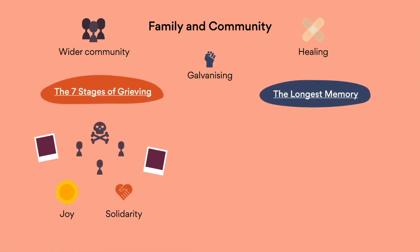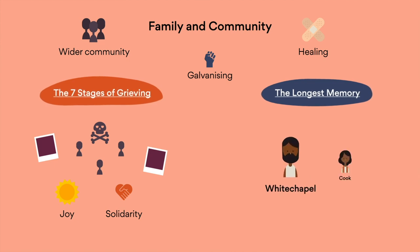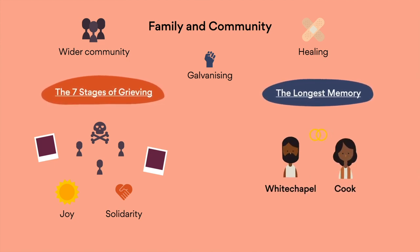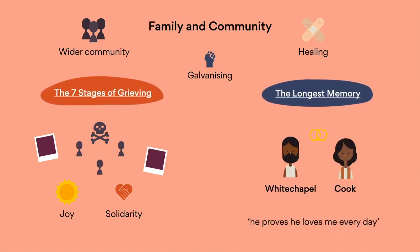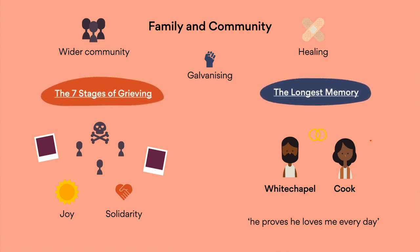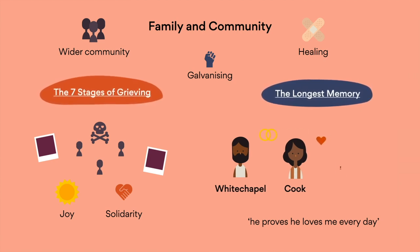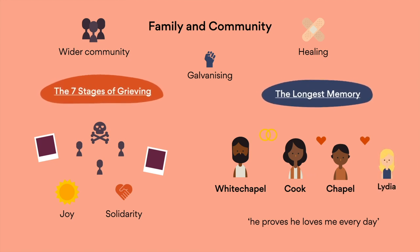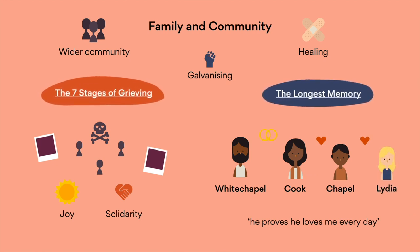In the novel, family ties are also important. Whitechapel and Cook build a committed relationship to one another — she even says he proves he loves me every day. At the same time, Cook also provides her unconditional love and support to Chappel, whose education and eventual relationship with Lydia are facilitated by her.